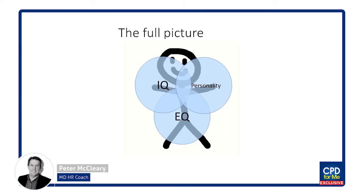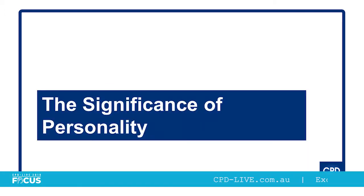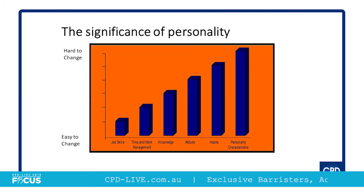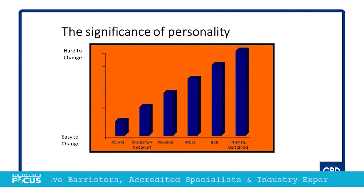There are three parts to what makes you tick: one's IQ, one's personality, and one's emotional intelligence — EI, also called EQ. There was some stuff released from Harvard Business Institute, probably about 15 years ago now, which identified these challenges around the significance of personality on what's easy to change and what's hard to change.